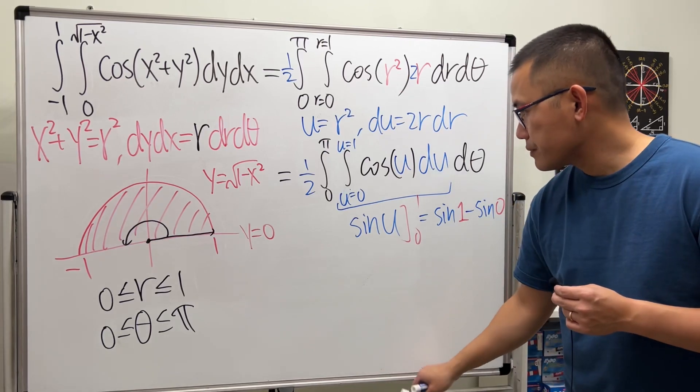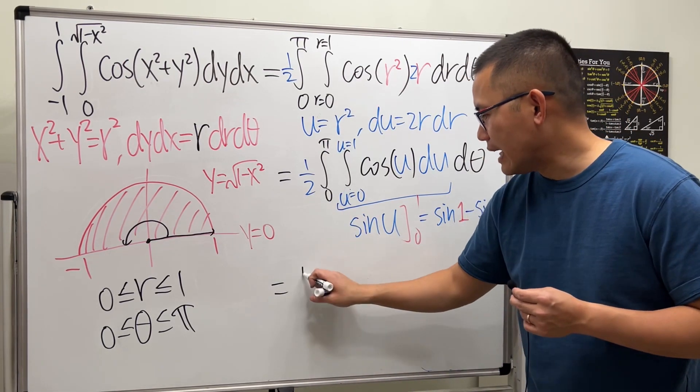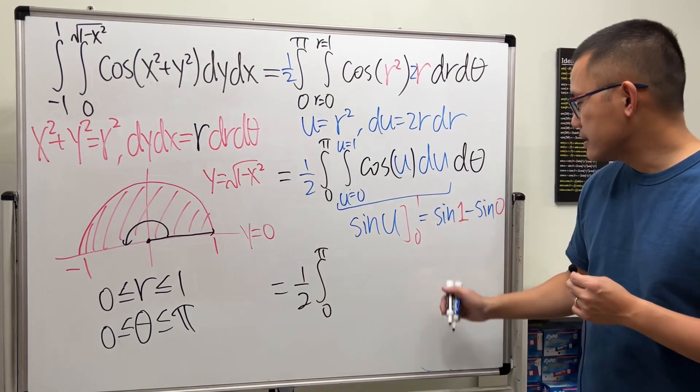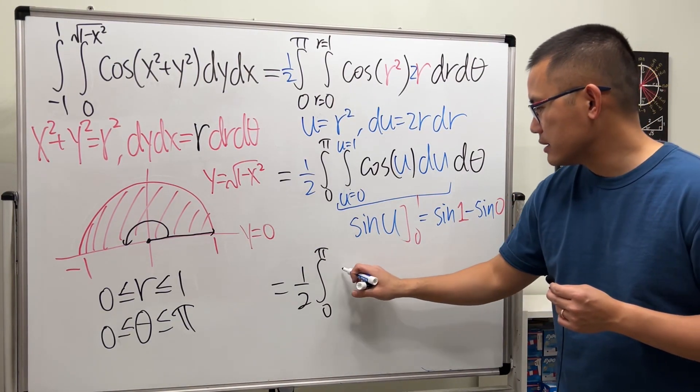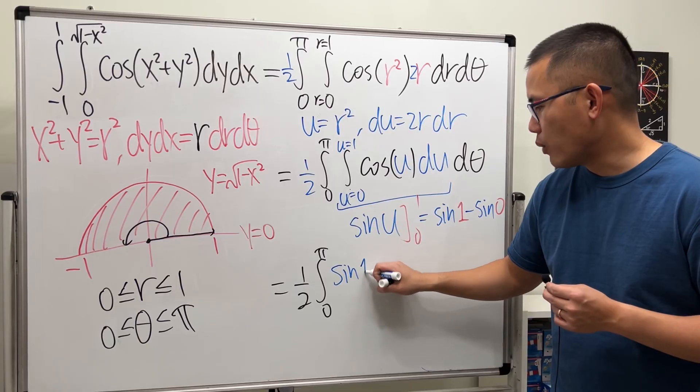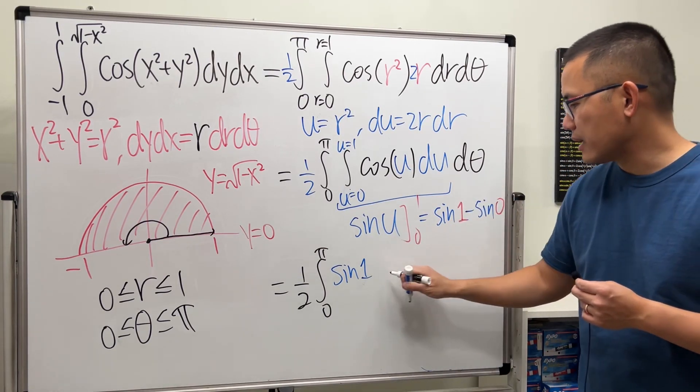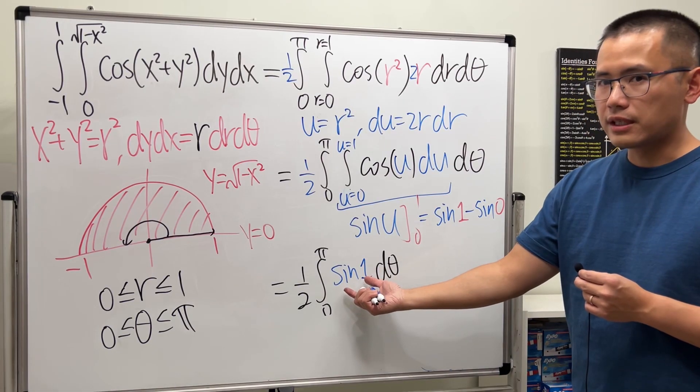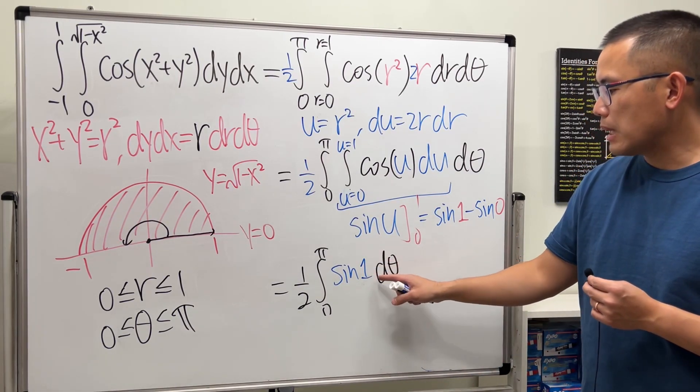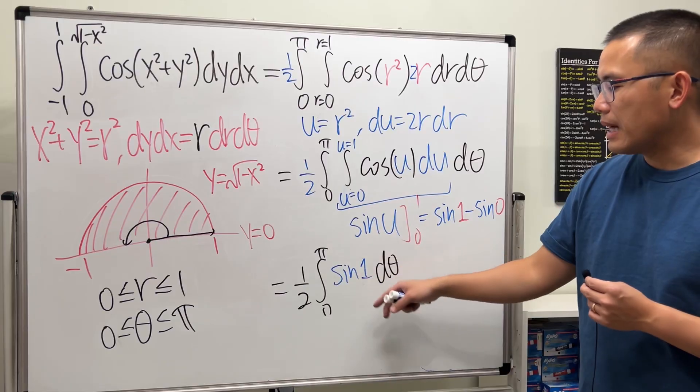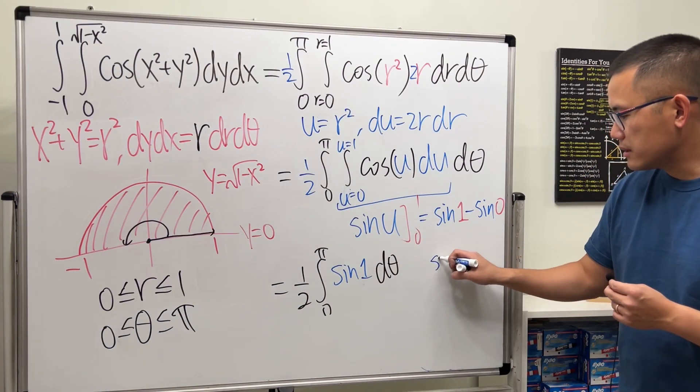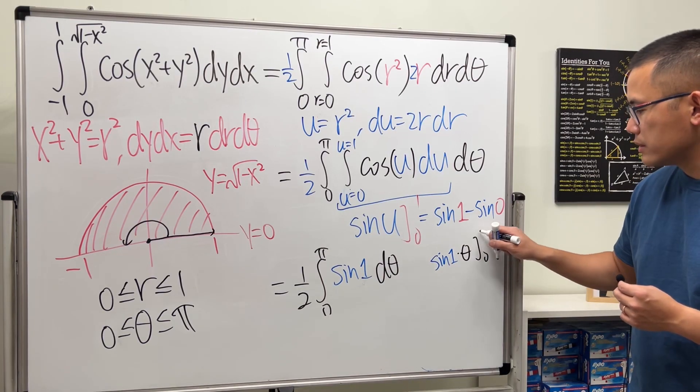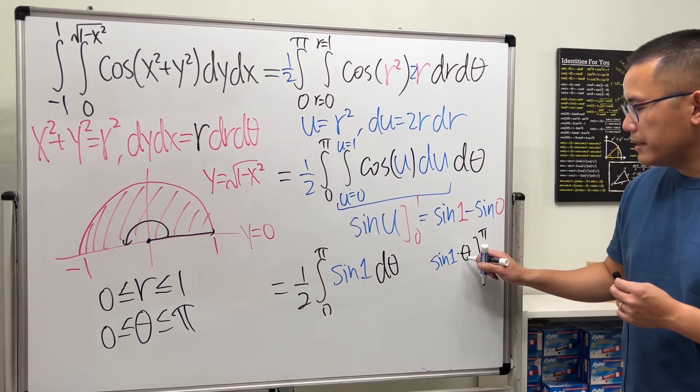Here we will have the one-half, integrating from 0 to π. On the inside, it's just going to give us sine of 1, and then we have dθ. Now to integrate this, because this is just a constant, we just have to multiply by θ and then plug in π, plug in zero. So it looks like sine of 1 times θ, going from 0 to π. Putting π here, well, just sine 1 times π, and then putting zero doesn't matter.